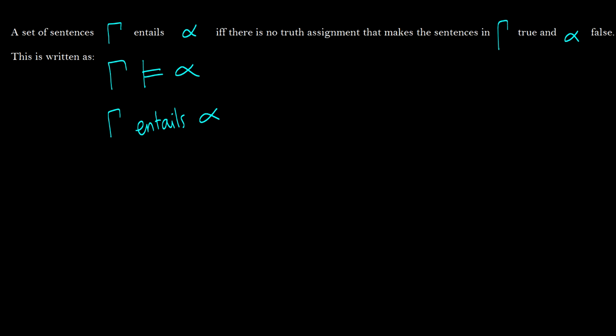So in terms that you probably would understand better than this, is that if we have a sentence A, and we have B and C, we have these two statements, then we can prove that B is true, or that it entails B.